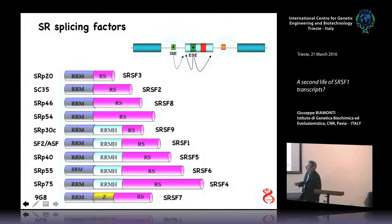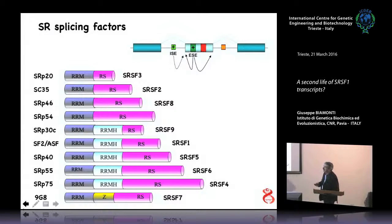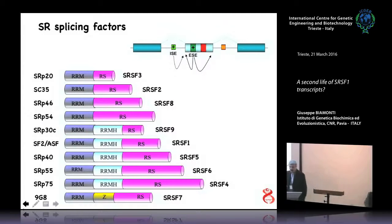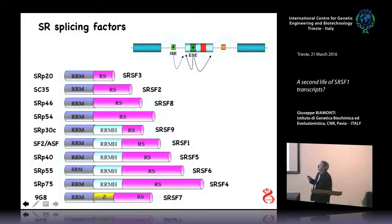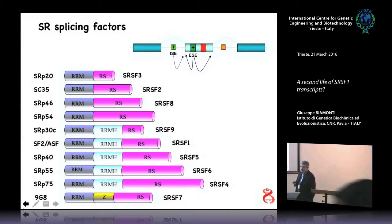The name of the family derives from the fact that all these proteins share a common structure. They all have a C-terminal domain that is rich in serine-arginine dipeptides, and these properties give the name to the family. They are assumed to induce splicing, to promote inclusion of exons, and they act by interacting with splicing regulatory elements called enhancers of splicing, which can be either in the exons or in the introns.